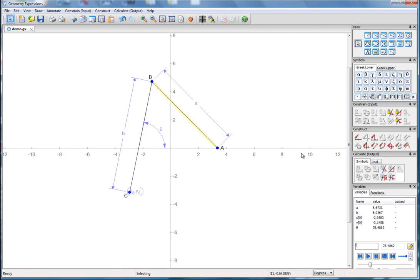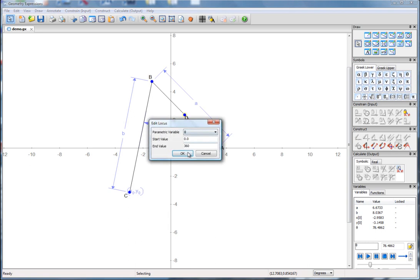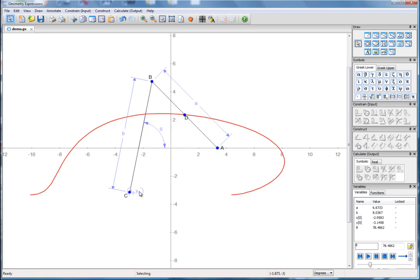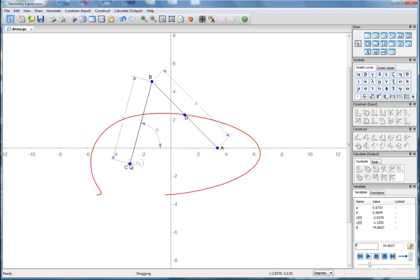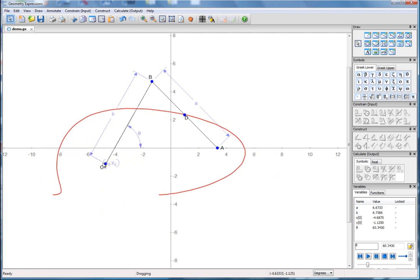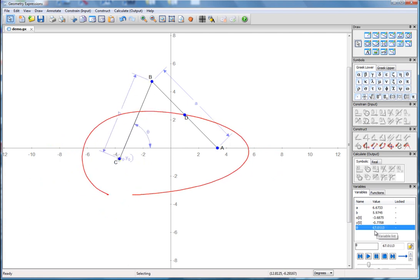Then just for fun, we'll put in a midpoint on this line here, and we'll construct its locus around theta. Okay, so we've got a nice interactive diagram here within Geometry Expressions, we can drag things around, we can play with the variables over here.